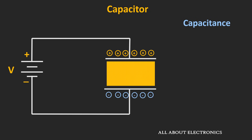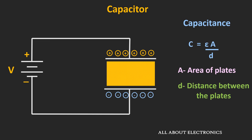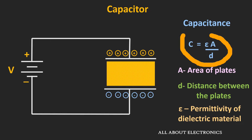There are three factors which affect the capacitance of a capacitor: the first is the area of the plates, the second is the distance between the two plates, and the third is the permittivity of the dielectric material. The relationship between these three is given by the expression C = εA/D. Capacitance is directly proportional to the area of the plates and the permittivity of the dielectric material, and inversely proportional to the distance between the plates.